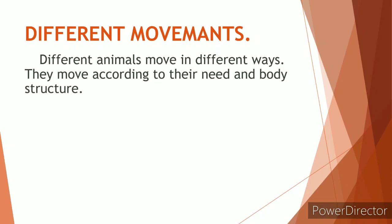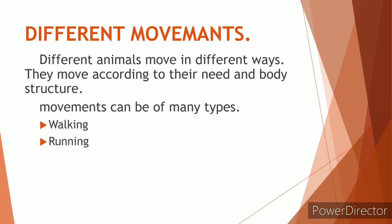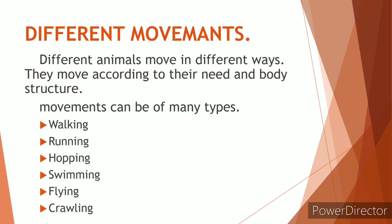How the animals around us — we can see that cat, dog, monkeys, birds, insects, etc. — they have some major movements like walking, running, hopping, swimming, flying, crawling, etc. So now let's talk about how many kinds of movement we can see in the animals around us.